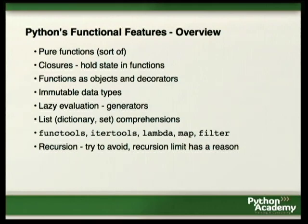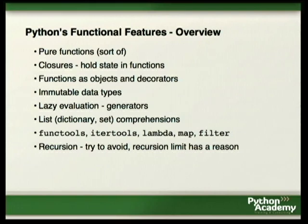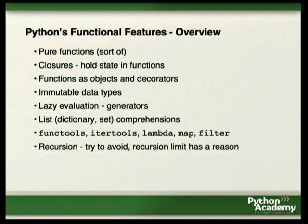Let's look at Python. Of those functional features, Python has a few: you can write pure functions, though it doesn't really work perfectly. You have closures, which help keep state in functions. Functions are objects, and you can use decorators. We have immutable data types — strings and tuples. There's lazy evaluation; generators are a step in this direction. We have list comprehensions, and in Python 2.7 dictionary and set comprehensions. There are tools like functools and itertools in the standard library, and we have lambda, map, and filter. Recursion is not the best fit for Python — it can be very slow.